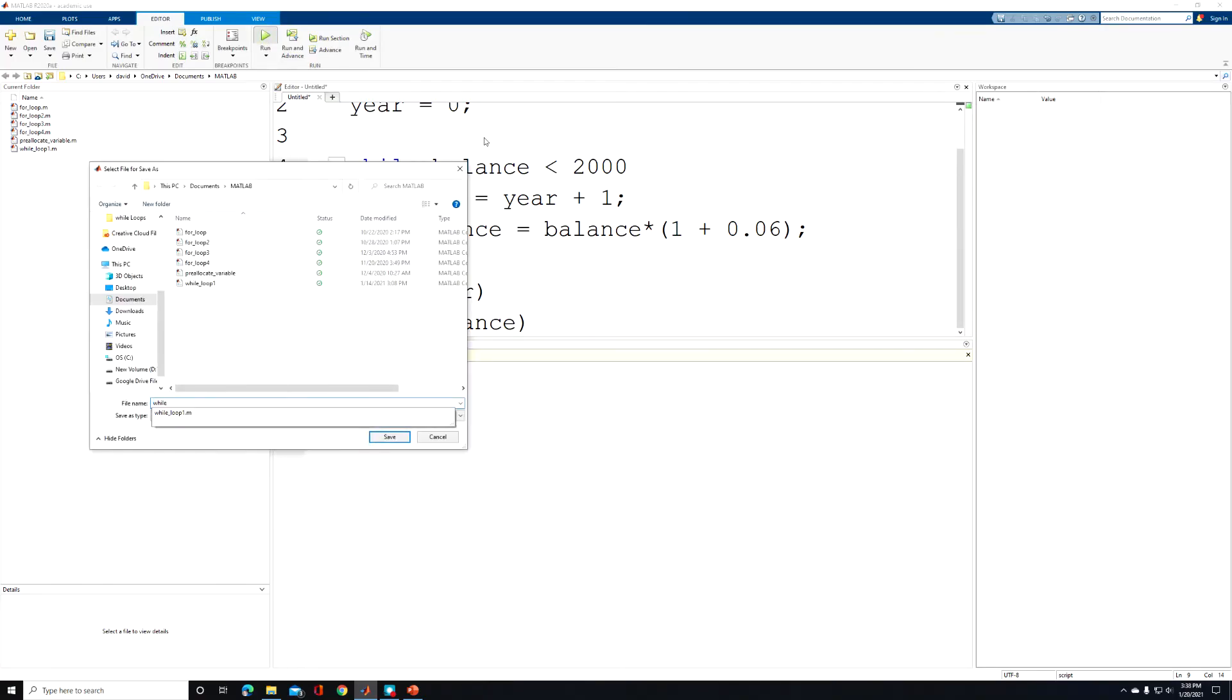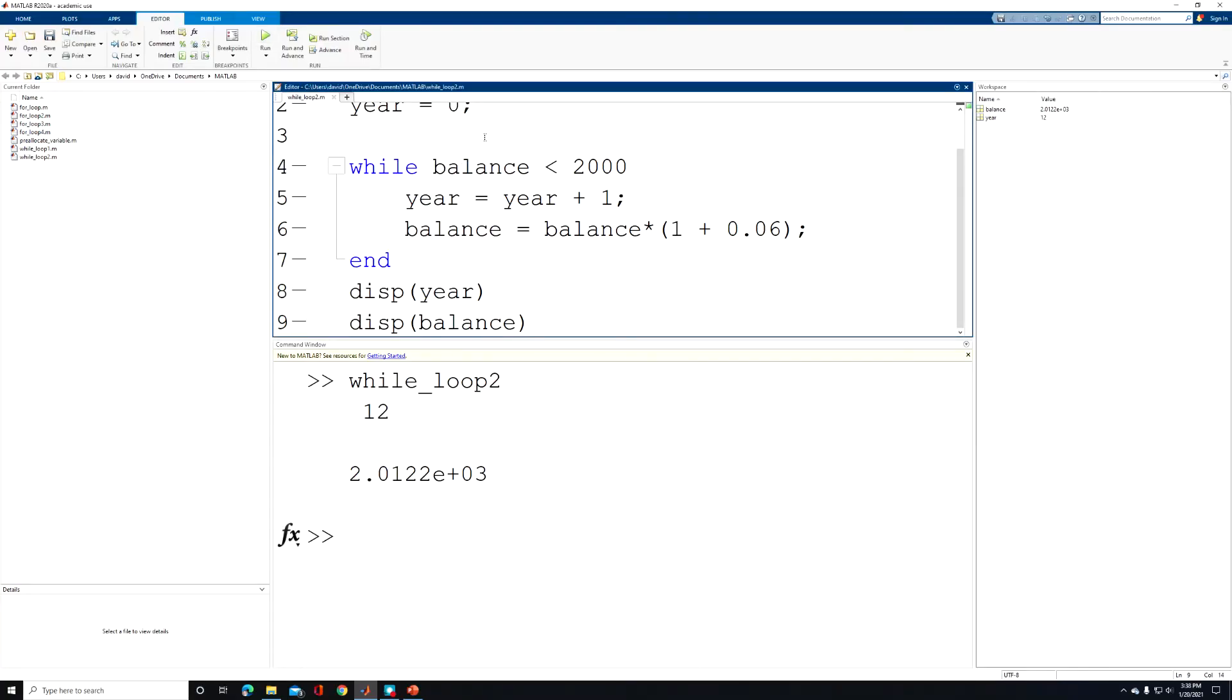I'm going to use while underscore loop two. And when I click save the program will run. And in this case, we can see that our final value for the year is 12. And our final balance is $2,012.